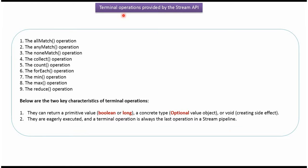In this video tutorial I will cover what are the different terminal operations provided by the Stream API: AllMatch, AnyMatch, NoneMatch, Collect, Count, ForEach, Min, Max, and Reduce. These are the terminal operations provided by the Stream API.